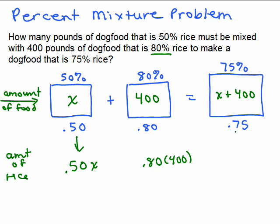How much is in the total vat? I want to make it 75% rice. So instead of being 80% it's only 75%, which is more than the 50%. You can guess there's going to be more of the 80%, because it's only going down from 80 to 75. So this would be 0.75 times (X plus 400).